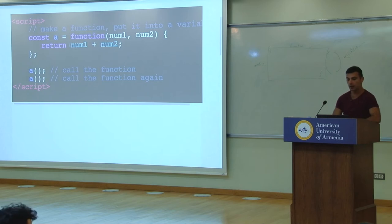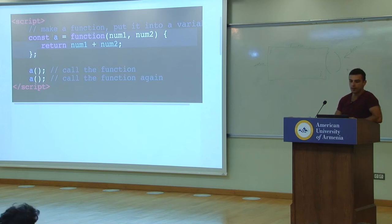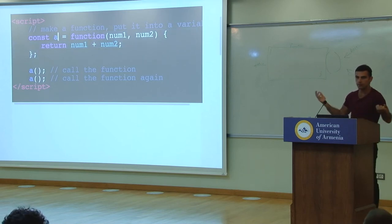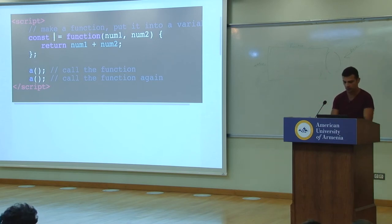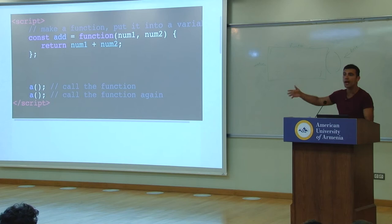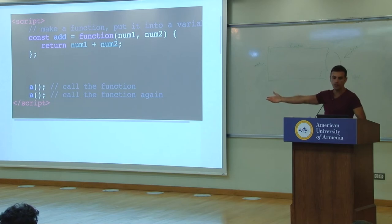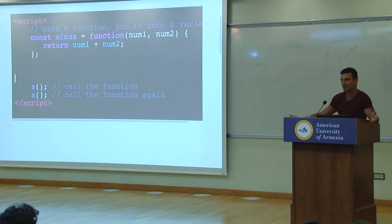We take this function and put it into a variable. Remember variables have names — they're names for values. What would be a good name for this function? Sum or add. Let's call it add just to keep it simple. It's important to have a name that describes the value. If we called this minus, people will get confused. If I called it z, you'd see z later and go, wait, what is that? Naming really matters.